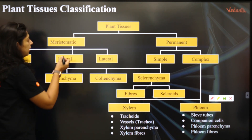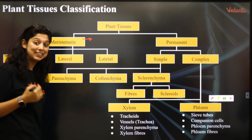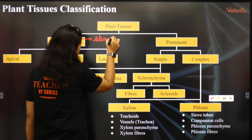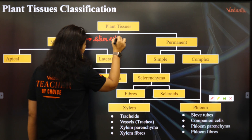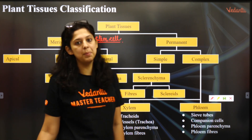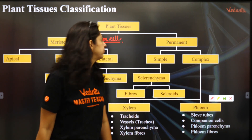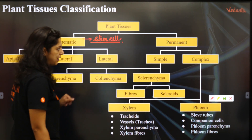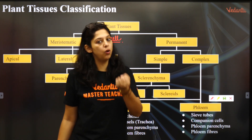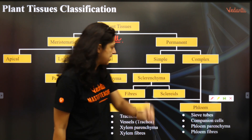Meristematic — anything which is stem cell type — that means it is not permanent. It is a meristematic tissue. It can form anything. That's called the meristematic tissue. Permanent cell means they have done up division and they only will become a specific form of cell.